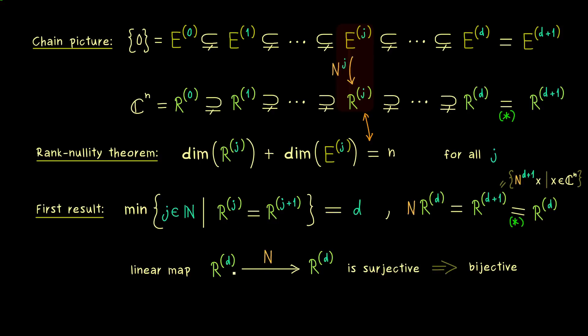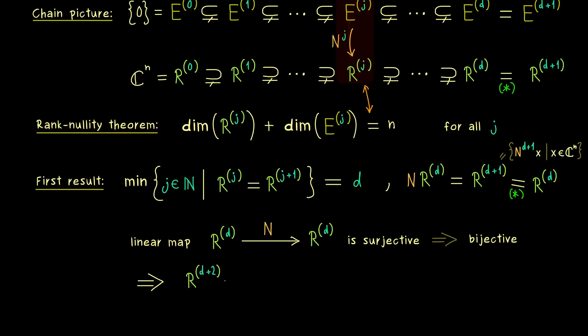And using that knowledge, we can go one step further in our chain. This means now we consider R^(d+2). And again, as before, by the definition of the range, this is simply N applied to R^(d+1). But obviously for R^(d+1), we already know it's equal to R^d. So then we have N R^d, and the same calculation as before shows us that this is R^d again.